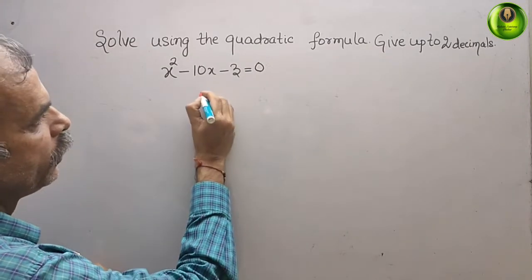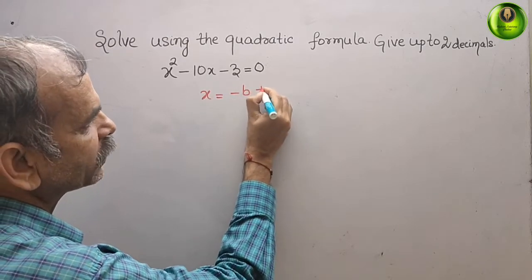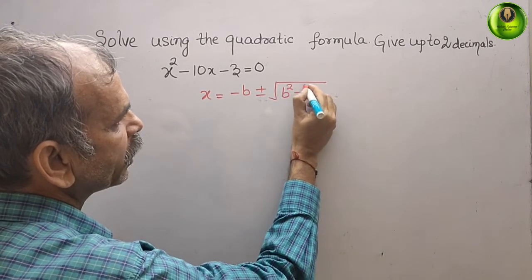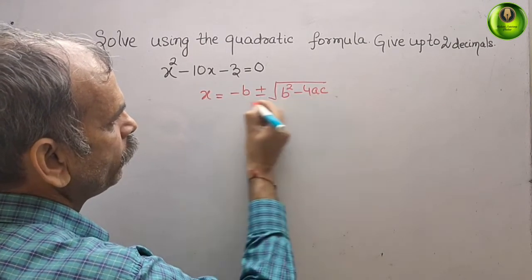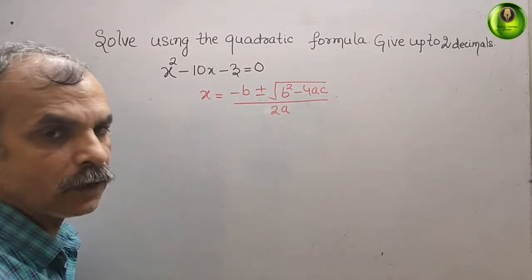The formula is x = (-b ± √(b² - 4ac)) / 2a.